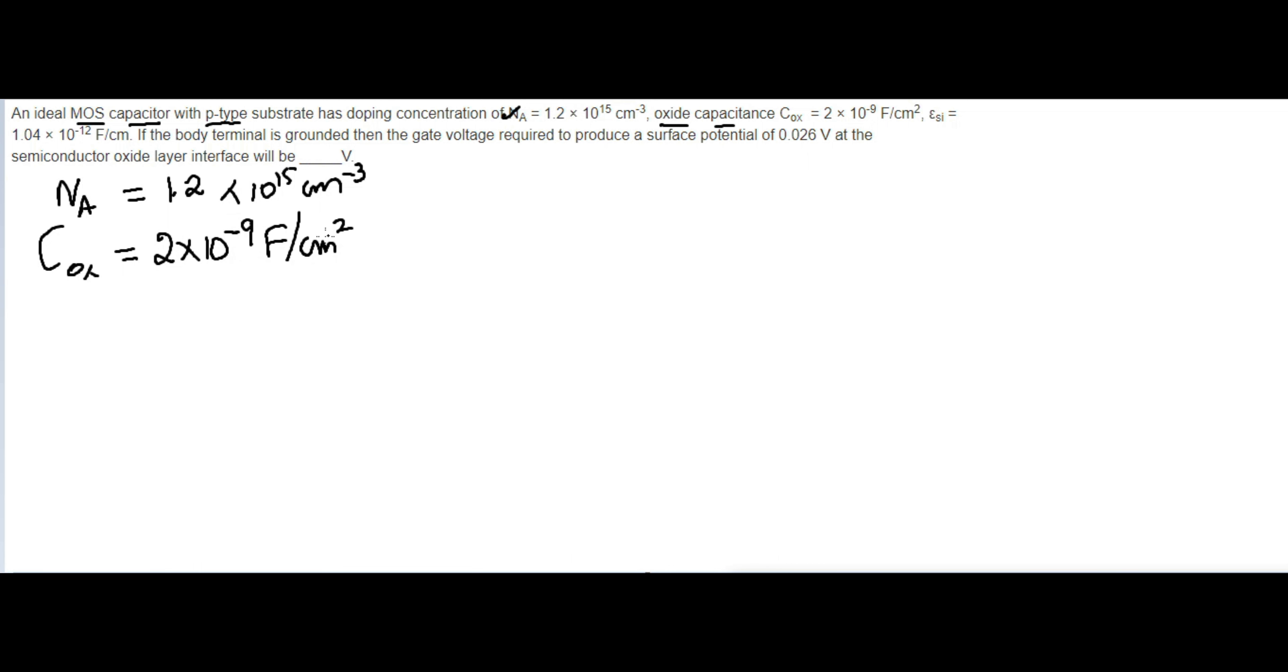The next parameter they give is epsilon_si (silicon permittivity). I'll write this equal to 1.04 × 10^-12 Farads per centimeter. So the silicon permittivity is available here.